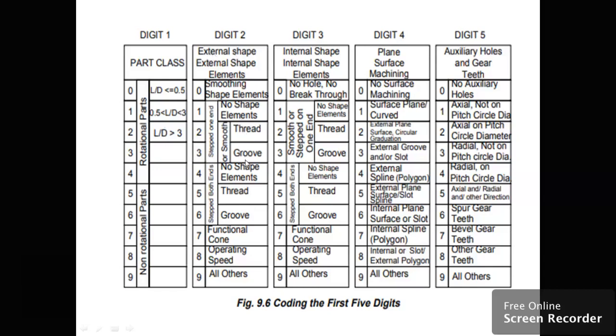For threads, grooves, or any other functions on external surfaces, similar codes exist for internal surfaces. This is for plane surfaces—external plane surfaces or surfaces with slots, internal plane surfaces. Finally, there are auxiliary holes, gears and teeth, and circular pitch dimensions.